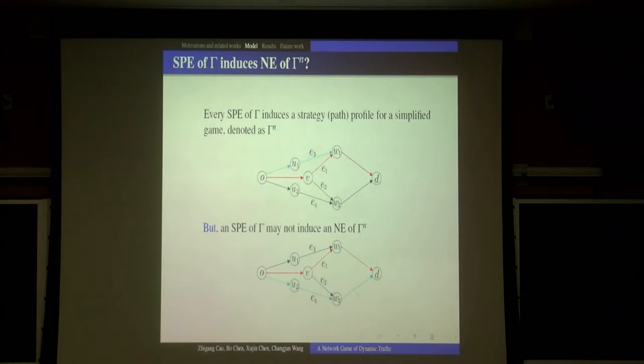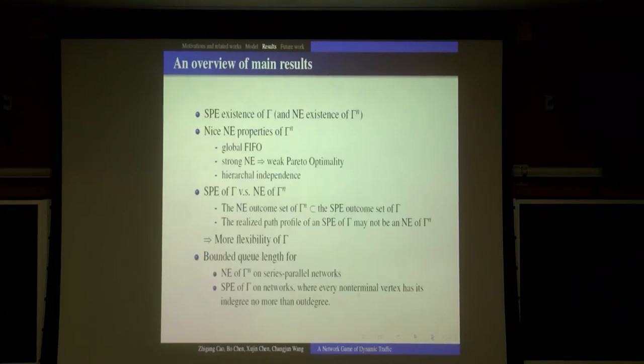Apparently we can see this path profile is not a Nash equilibrium of this normal form game. Because if player one chooses this path, then player two's best strategy is to choose this path. Then they will arrive at D at the same time.